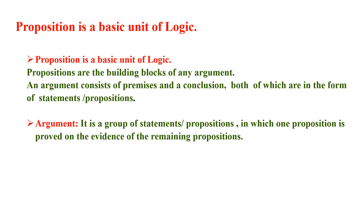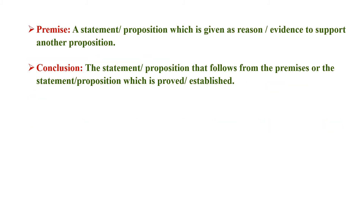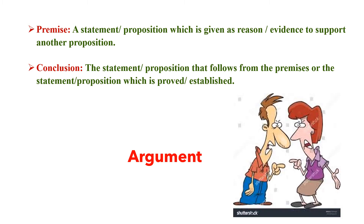An argument is a group of statements or propositions in which one proposition is proved on the evidence of the remaining propositions. An argument contains propositions because in an argument we establish our statement by giving evidence, which is possible only when we give information. A premise is a statement given as reason or evidence to support another proposition. A conclusion is the statement that follows from the premises — premise plus conclusion is called an argument.